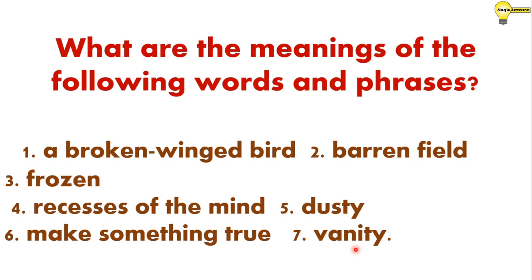So dear learners, from these words you can understand the dreamy condition of human beings. Dreams are of two types as we understand from this poem: the dream of night cannot come to reality, but the dream of day — the dreamer works to make it true in his real life.